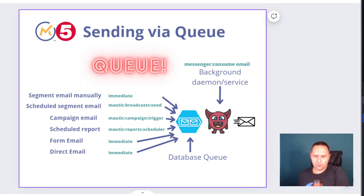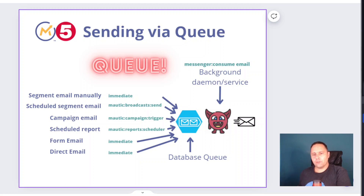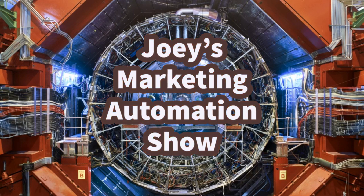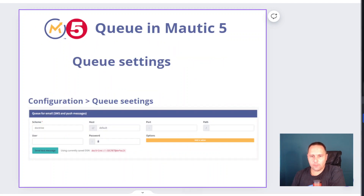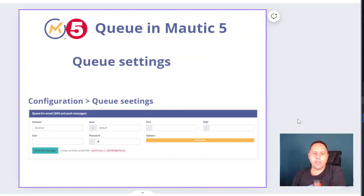If you have the queue set up — and I'm going to show you how in a moment — your Mautic will automatically push new emails into the queue. The background service, this daemon, will be responsible for pushing those emails from the queue out to the open internet and to your SMTP server. The queue has to be set up in the settings. Go to configuration queue settings, and by 'queue for email' you will see 'sync' — that means it's going out immediately, synchronously. You have to change that to 'doctrine,' and the host should be 'default.' That's the only setting you have to do. From this moment on, your emails will be sent via the database queue.